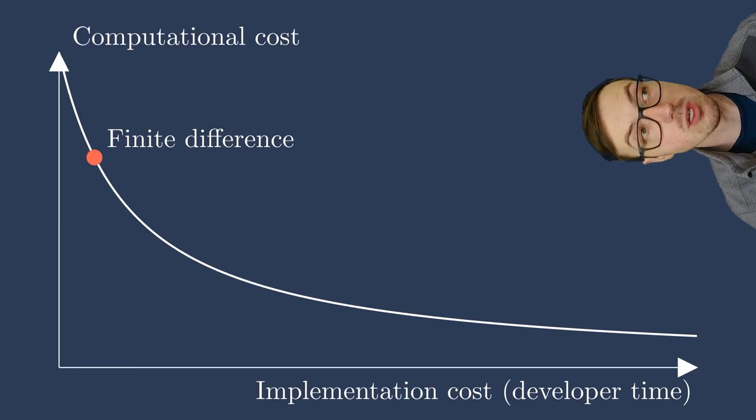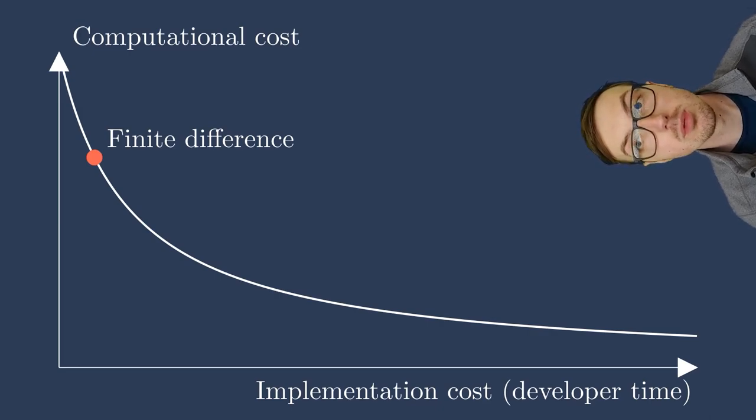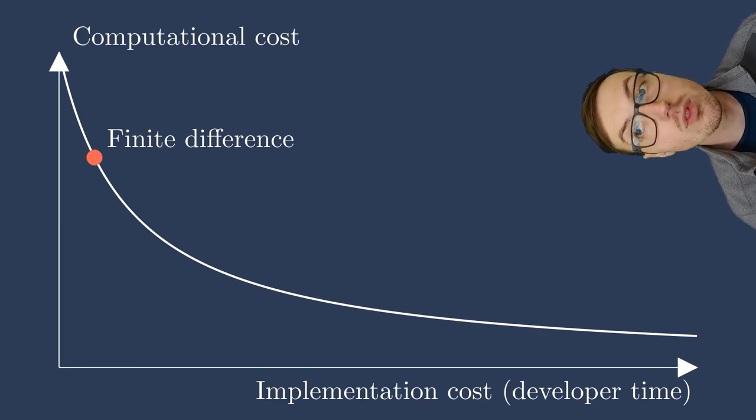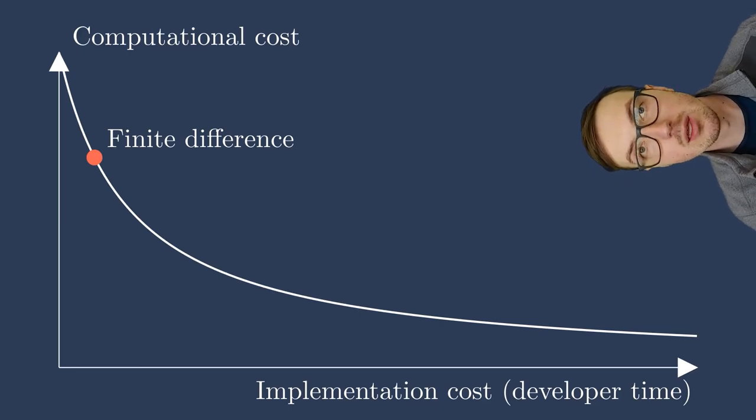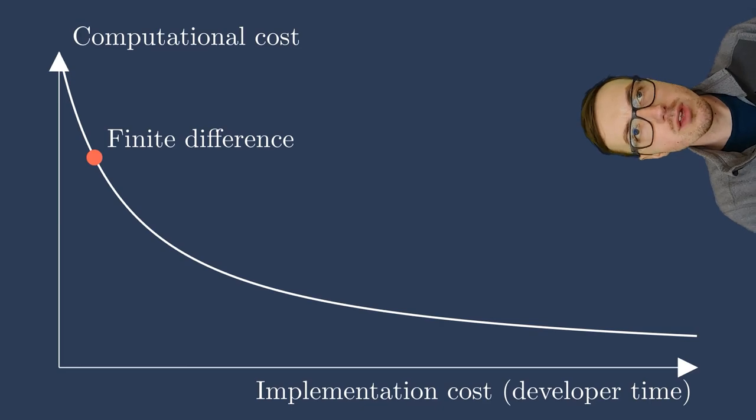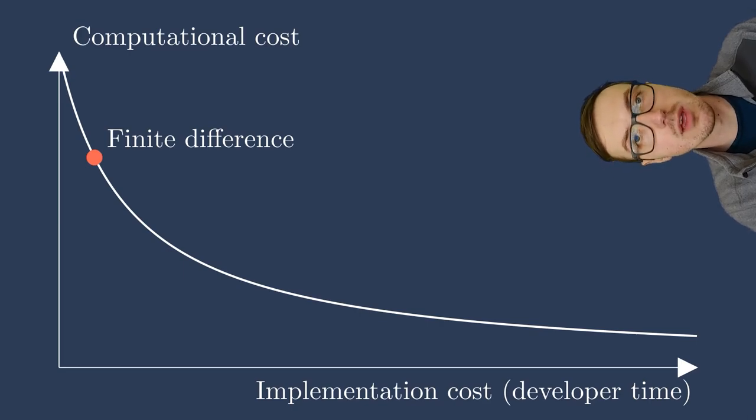You can have a black box, in fact, perturb it and look at the outputs and how they change. This is very, very cheap in terms of developer time or implementation cost. However, the computational cost is relatively high because you have to perturb and run the model at each finite difference point. Additionally, in the grand scheme of things, these derivatives may not be that accurate, and thus your optimization may take longer because you have less accurate derivatives.